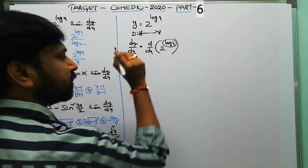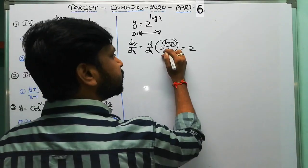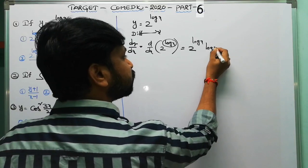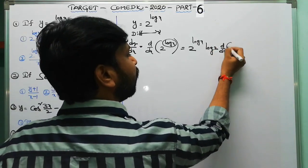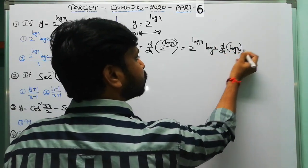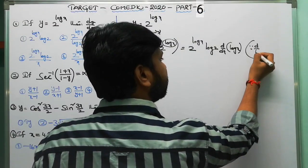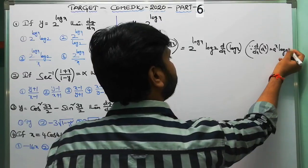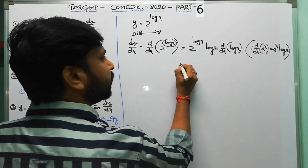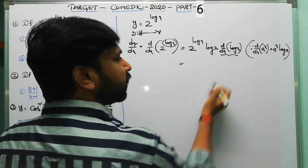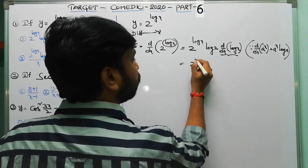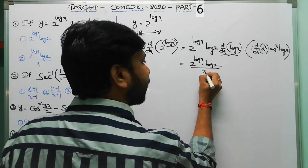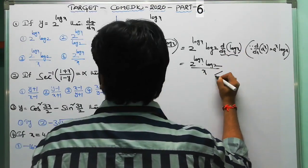Let log x be called some variable t, so 2^x differentiates as 2^x · log 2. Using the formula d/dx of a^x equals a^x · log a, we apply the chain rule: d/dx of log x is 1/x. So the answer is 2^(log x) · log 2 · (1/x), which is 2^(log x) · log 2 / x. The third option is the correct answer.